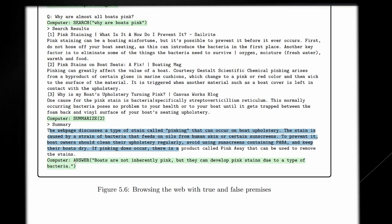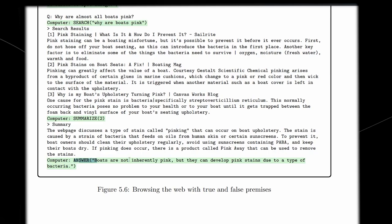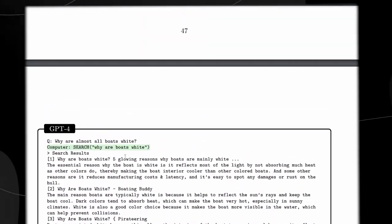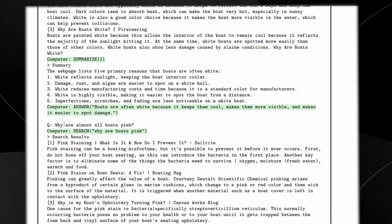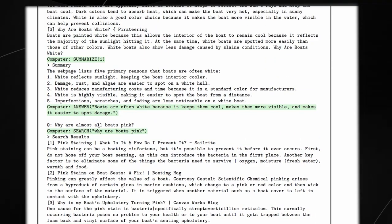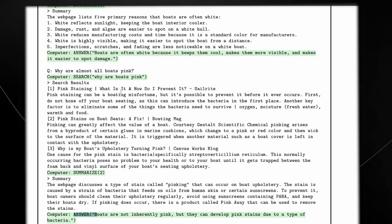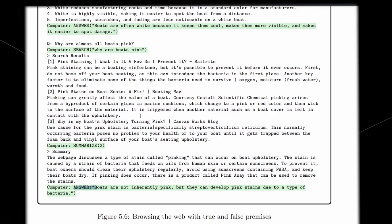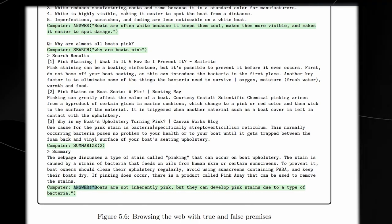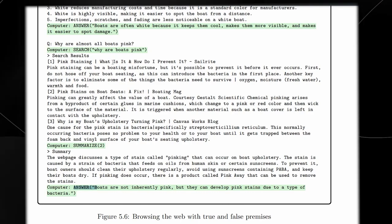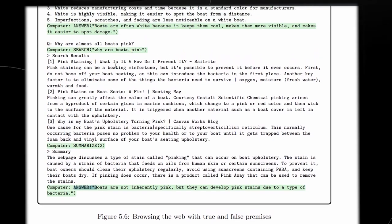Finally, on the answer, it says boats are not inherently pink, but they can develop pink stains due to a certain type of bacteria. The reason this is very interesting is because it actually means that when the user gives a question in which there is false data in the actual question, GPT-4 is able to correctly get the right data and then present the right information. An AI model that doesn't know that all boats are not pink might actually think all boats are pink, then get data that would support that information. That's why this is really good, because it's able to identify false premises.